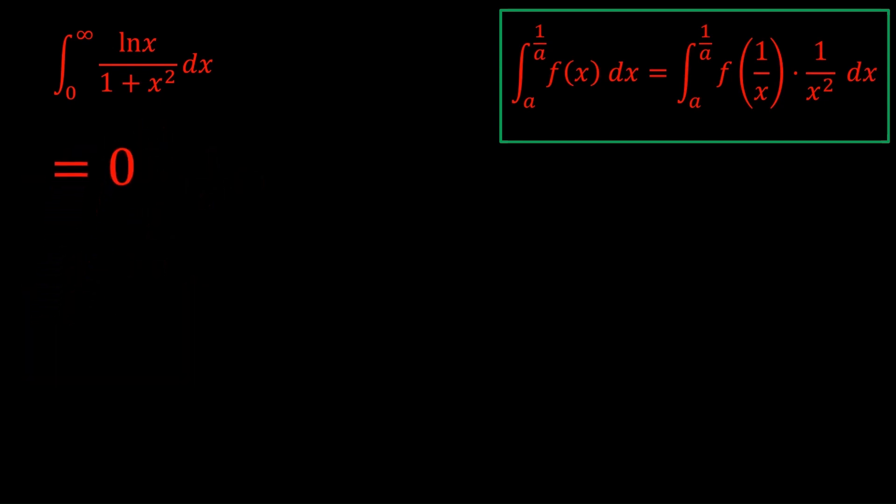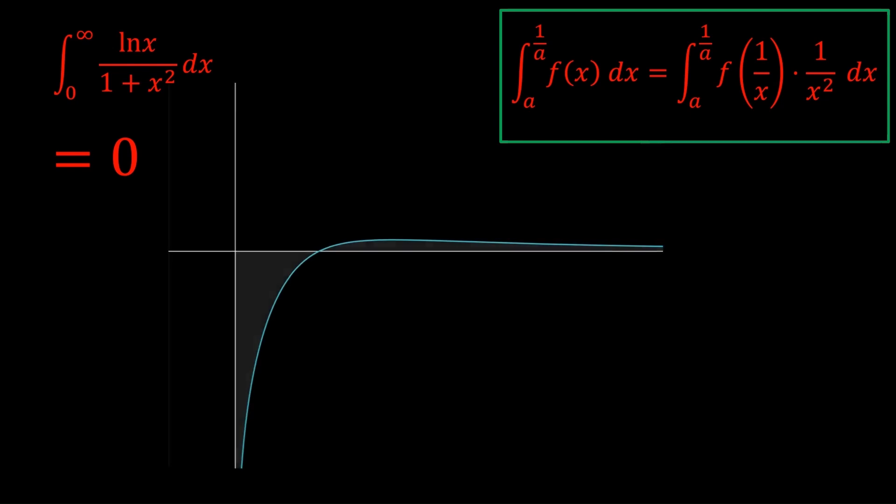You could add the integrals together and see that as well. That's pretty crazy, because if you look at the graph of the integrand, it tells you that these two areas have to converge to the same value. Because the areas above and below the x-axis have to cancel out for the full integral to be 0.